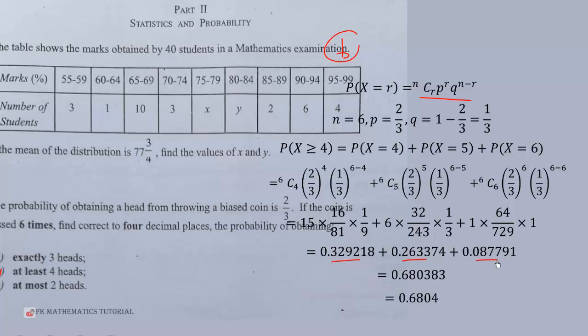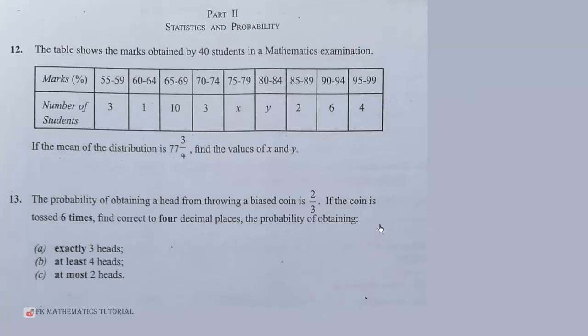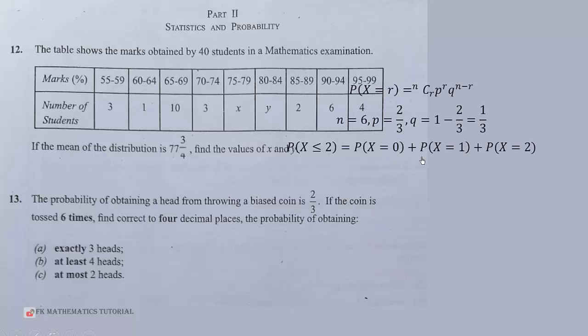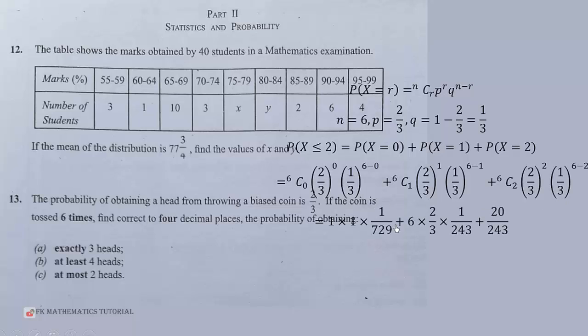At most 2 heads means X equals zero, one, or two. We substitute the values X equals 0, X equals 1, X equals 2 into this formula. That will give us what you are seeing here. When we simplify we are obtaining 0.1001 to four decimal places.